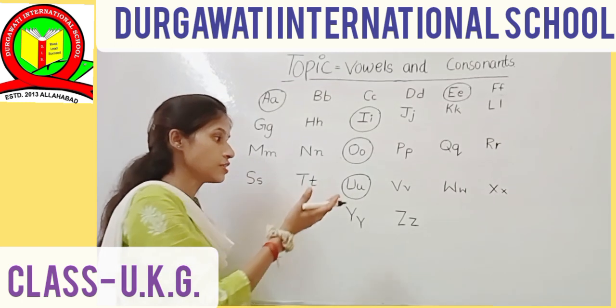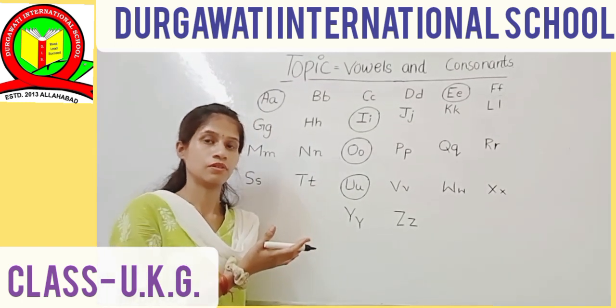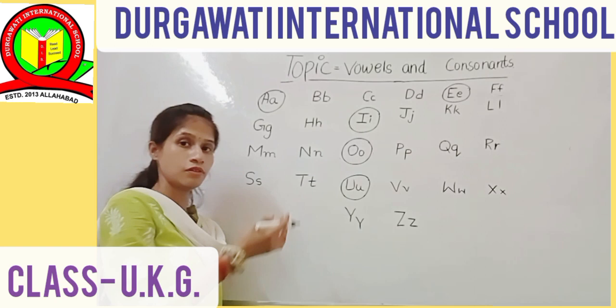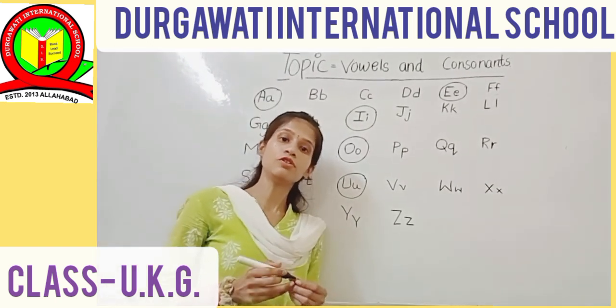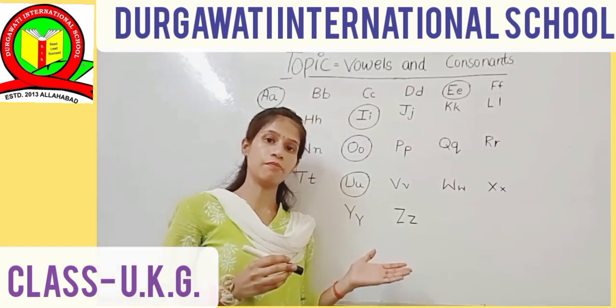And the rest of the letters are consonants. And there are 25 consonants in the English alphabet.